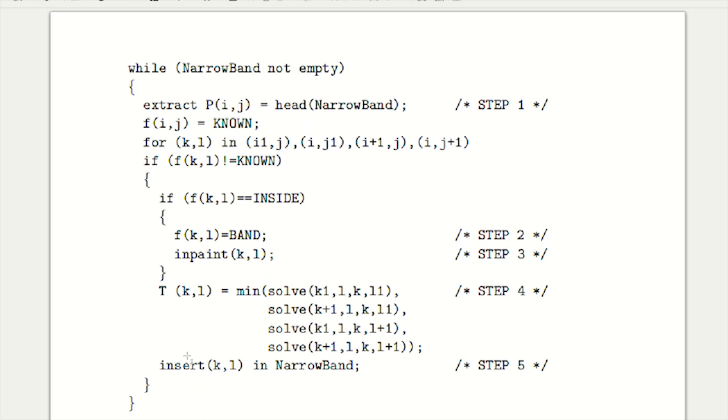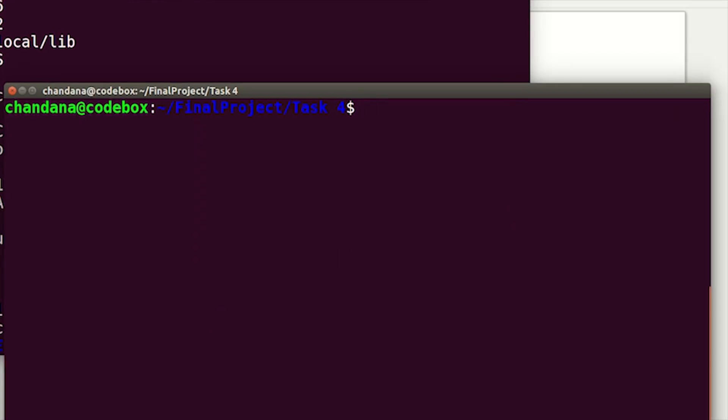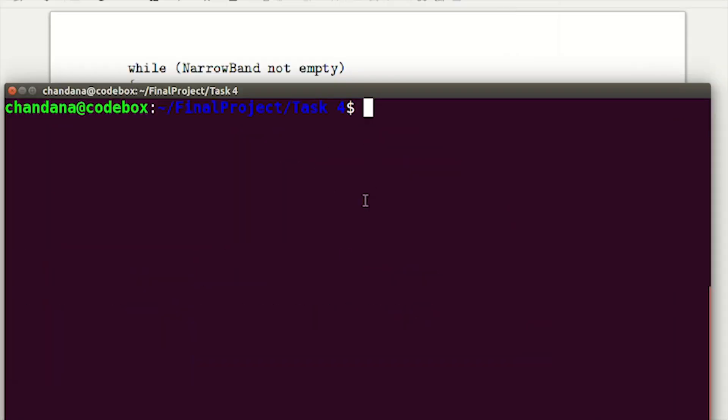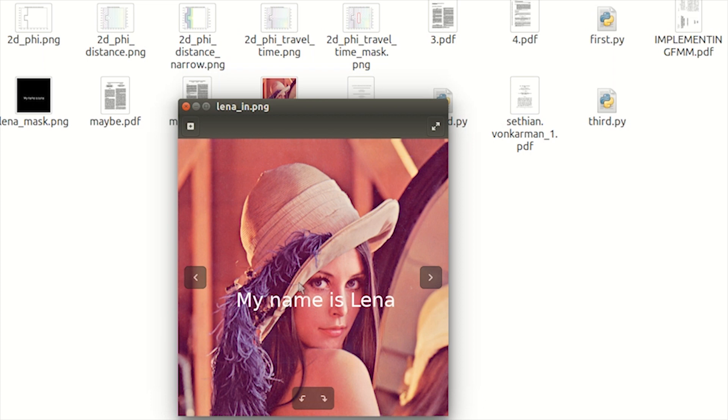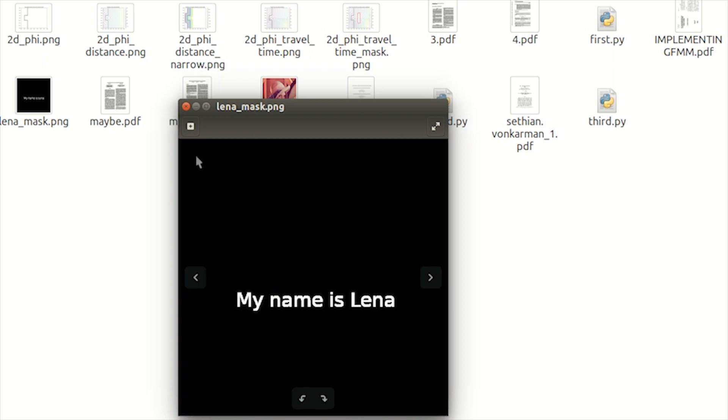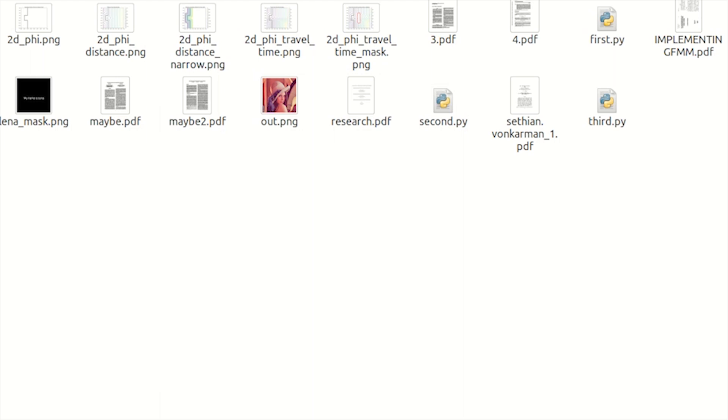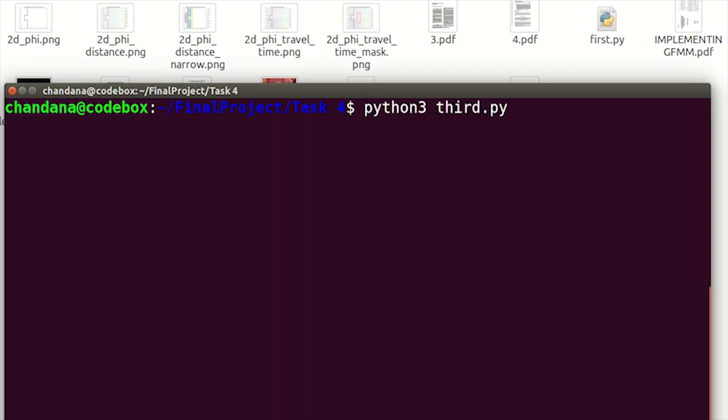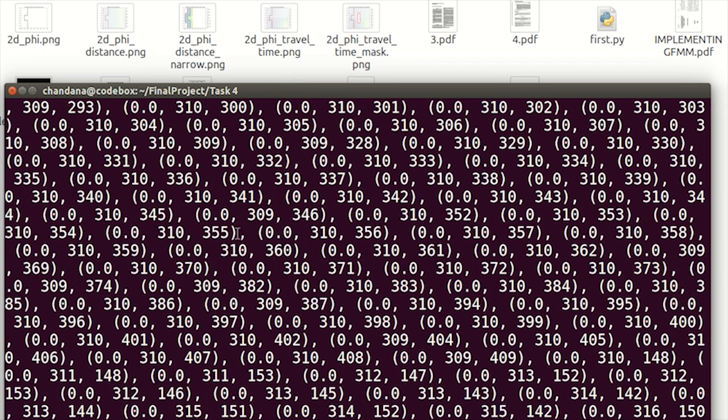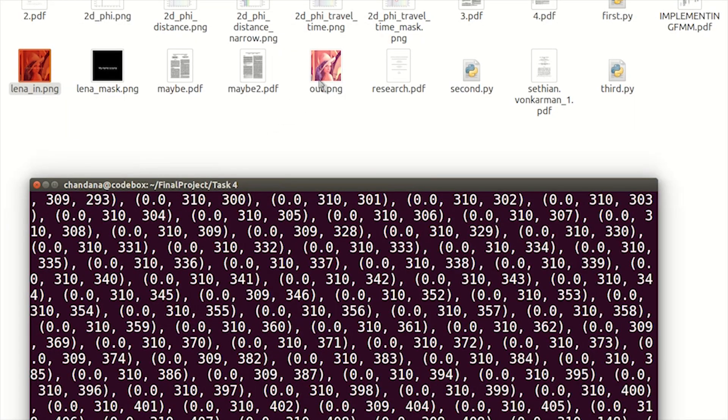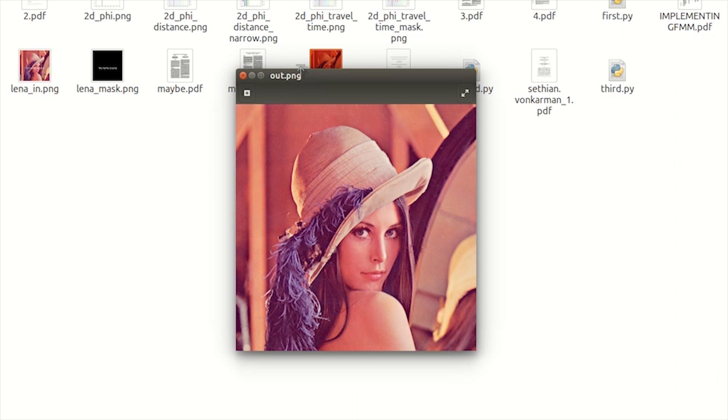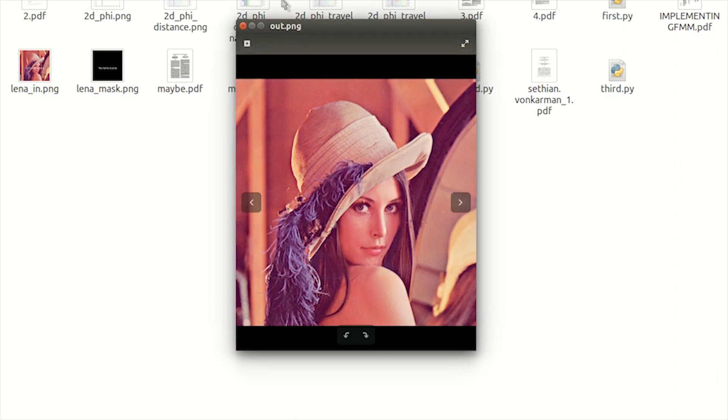Now I'll show you how this works. First, here's the input image—in the program we've converted it to grayscale. This is my mask. Let's run the program. We have completed the program, and the solution is saved as out.png. This is our inpainted solution. Thank you so much for watching.